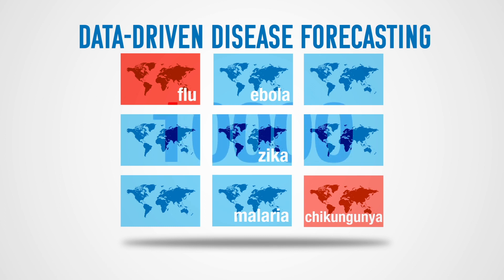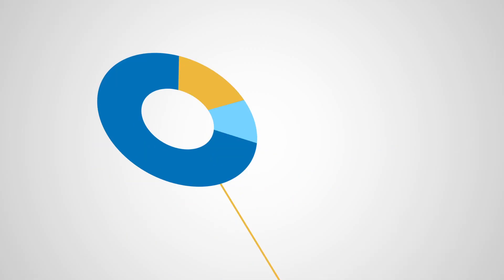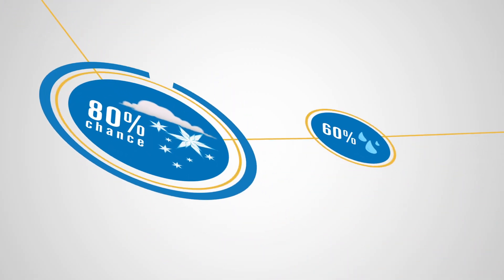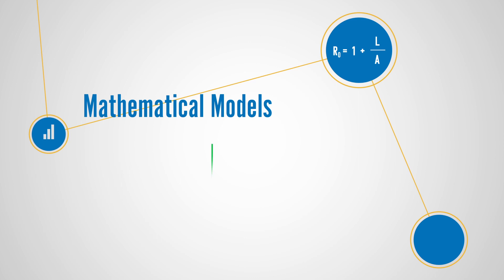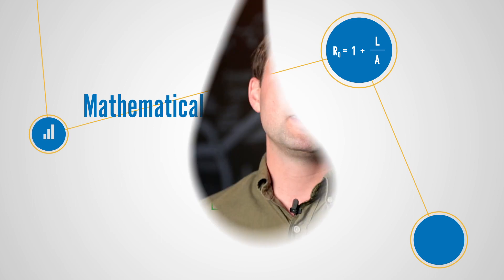But it's actually possible to use disease models — these are mathematical models of disease spread — to forecast how many people will get sick tomorrow or next week. So much like how you have a weather forecast that will tell you what the weather will be like next week, it's possible to use mathematical models to forecast how many people will be sick next week. And you can use this information to actually help better plan public health interventions.